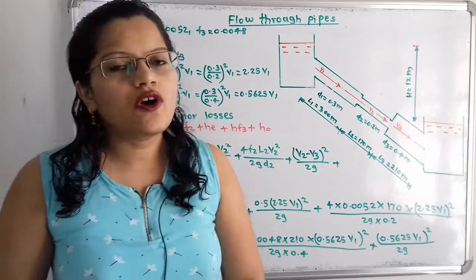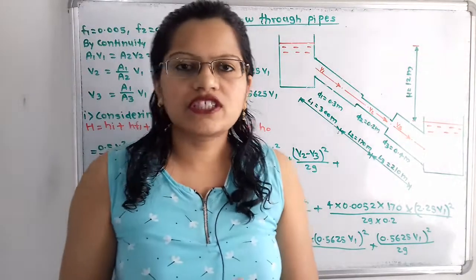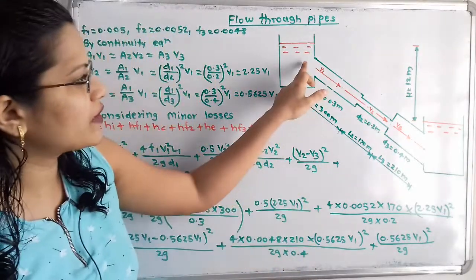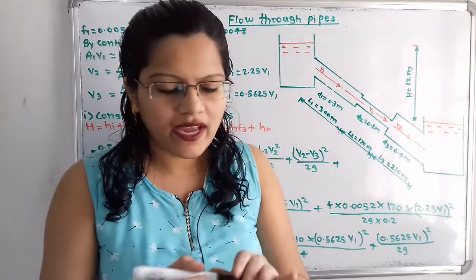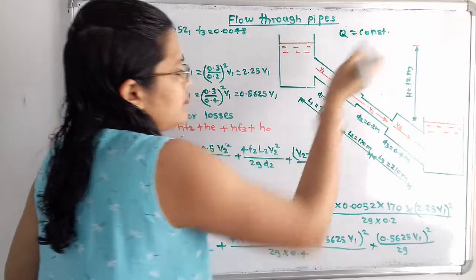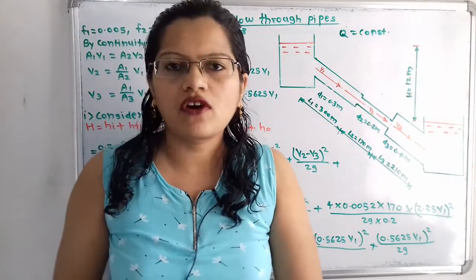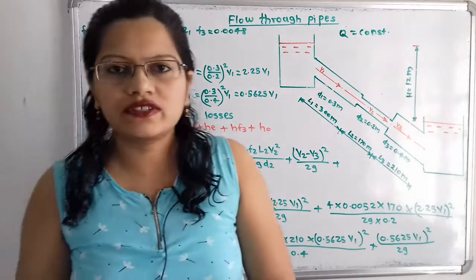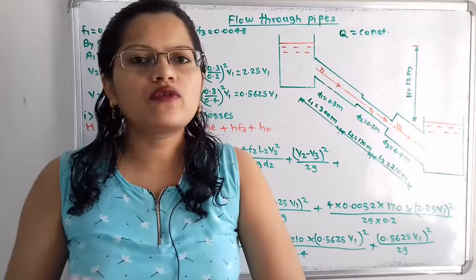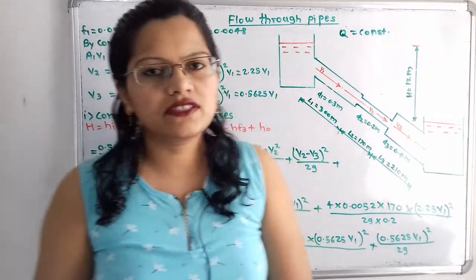If we observe this system, the discharge Q remains constant when water is flowing through these pipes. We also need to find out the head losses, which include major losses as well as minor losses.